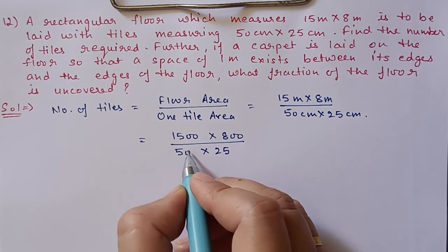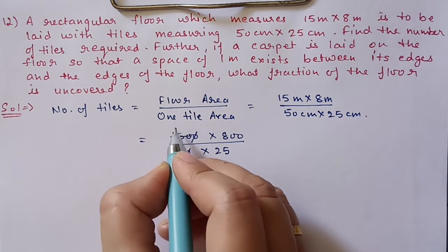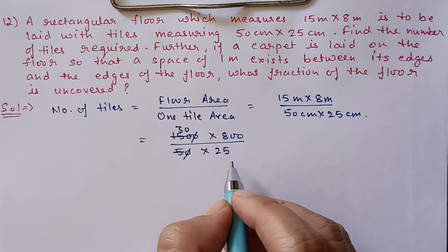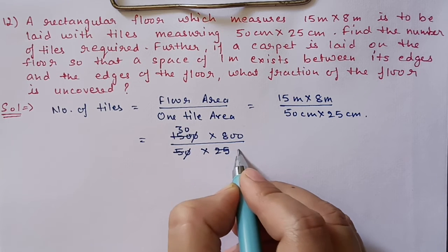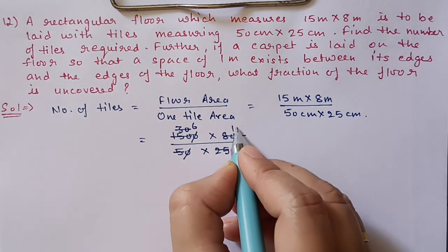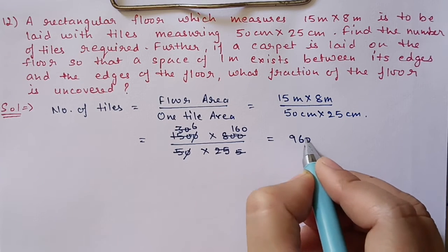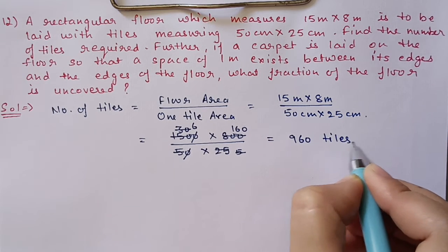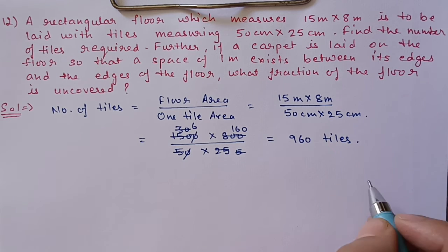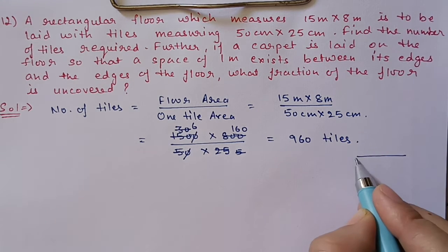After cancellation — cancelling factors of 10, 5, and other common factors — we get a total of 960 tiles. Next we have to find out the area of the carpet and the uncovered area.